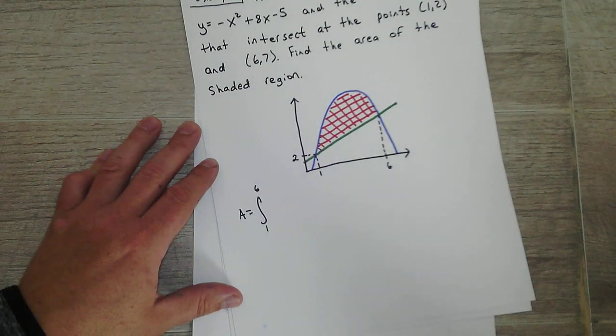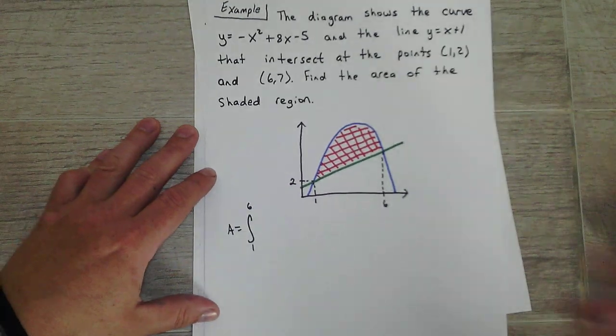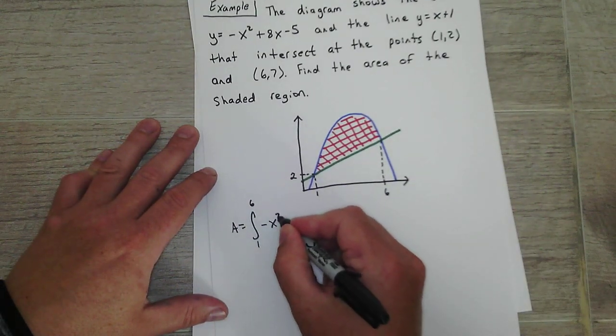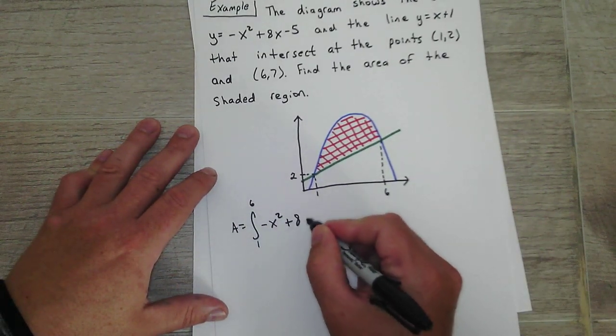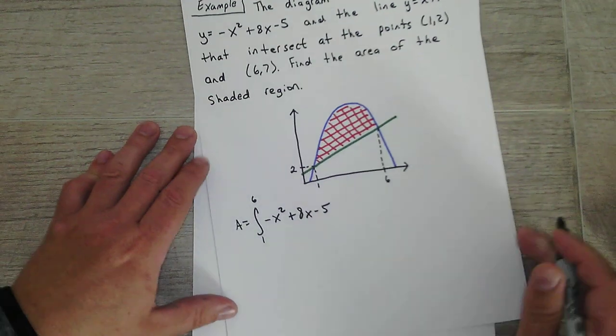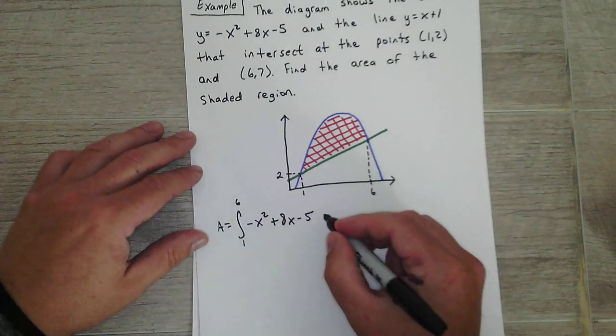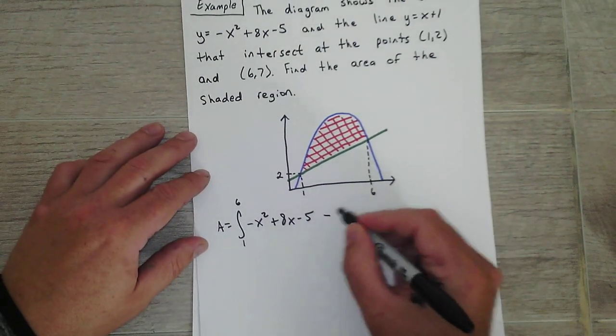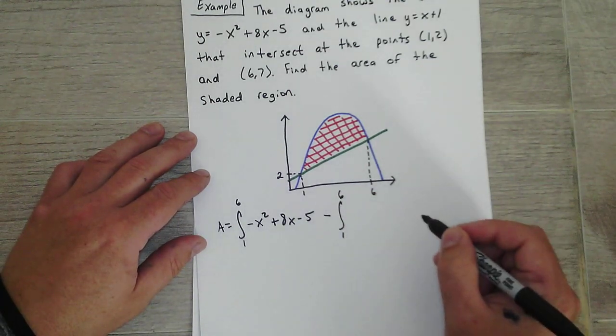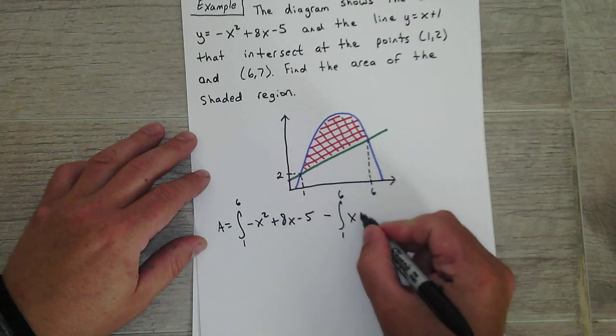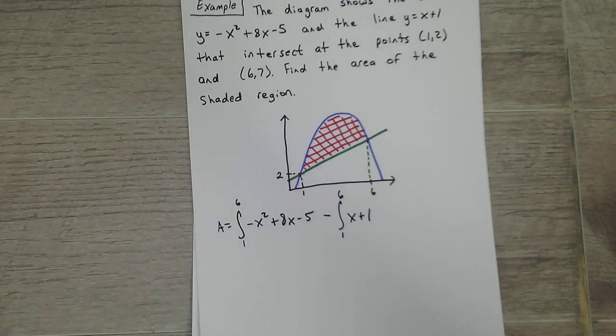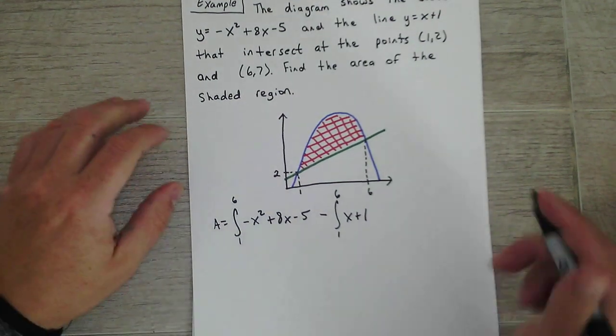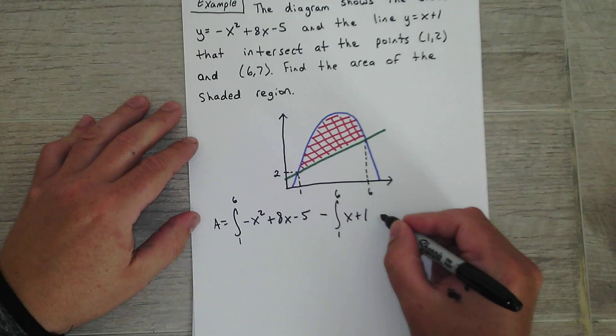So I have x... and then it's minus the integration 1 to 6 of x plus 1. Okay, so dx.